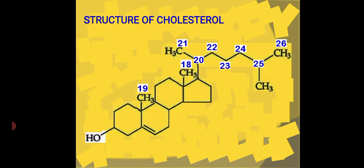So where does the first carbon start from? It's from here — it goes like this. This is the 17th carbon. And so this is the structure of cholesterol: a cyclopentano-perhydro-phenanthrene ring system.